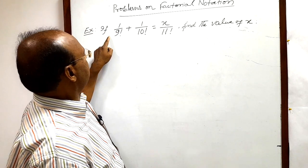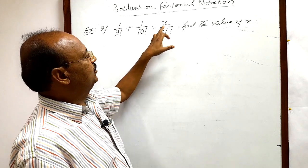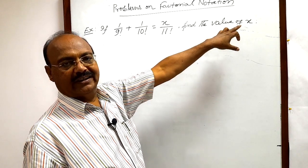Here question is if 1 by 9 factorial plus 1 by 10 factorial is equal to x by 11 factorial, then find the value of x.